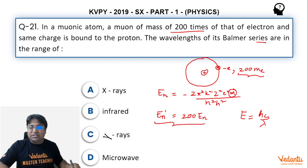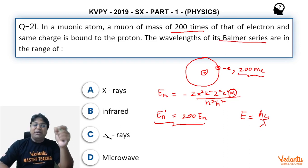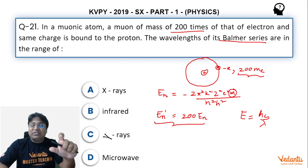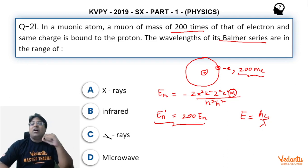Balmer series is the series in which visible light is found. So if you don't remember, you can estimate or recall that visible light belongs to 400 nm to 700 nm range. So if the energy of these photons are increased by a factor of 200, then the wavelength range decreases by a factor of 200, which means that now we are discussing wavelengths of few nanometers, which is the range of x-rays.